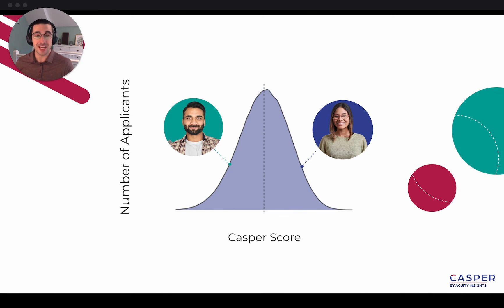The CASPER score gives programs insight into how Lucy compares to Jim in various aspects of interpersonal skill and situational judgment. Programs can use CASPER early in their admissions process alongside metrics like GPA, personal statements, or standardized test scores.